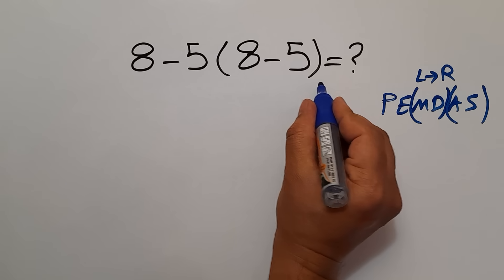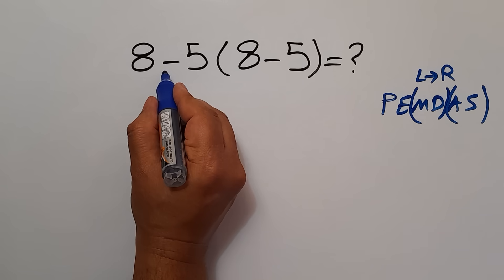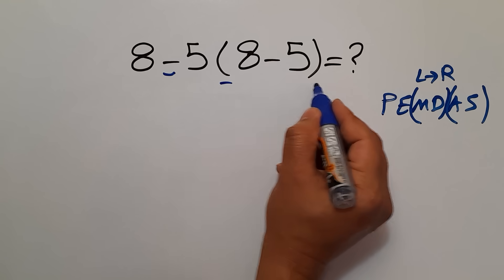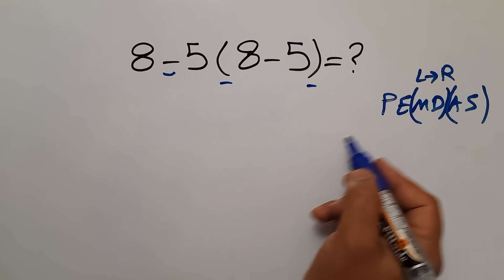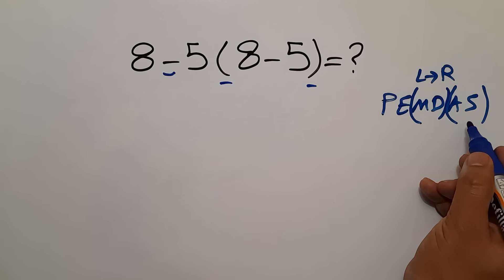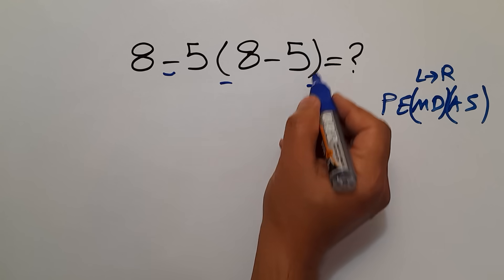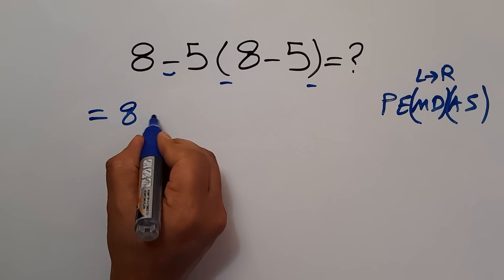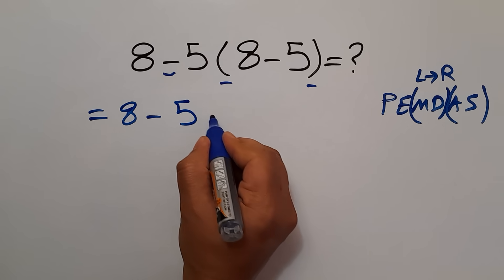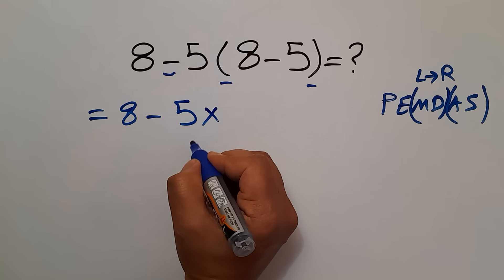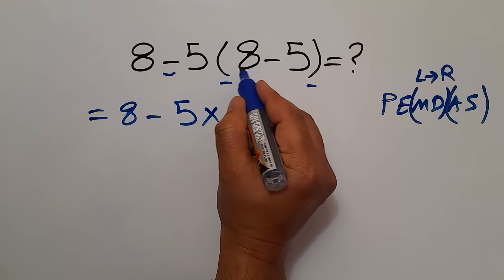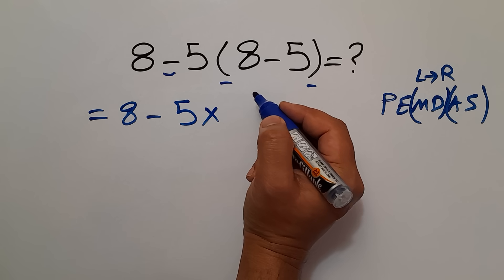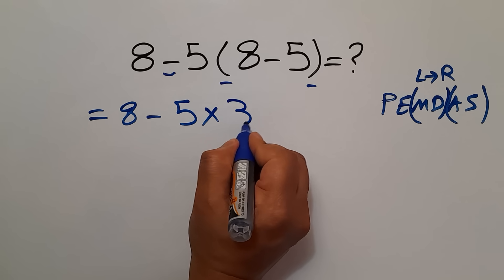Here, in this expression, we have this subtraction and this multiplication with parentheses. According to PEMDAS, first we have to handle these parentheses. So, 8 minus 5, then times these parentheses. Inside these parentheses, we have 8 minus 5, which equals just 3.